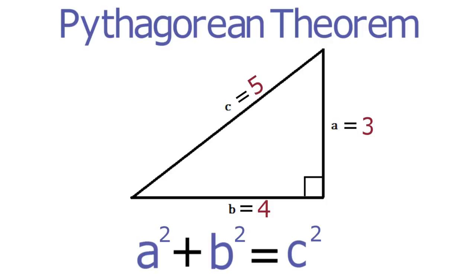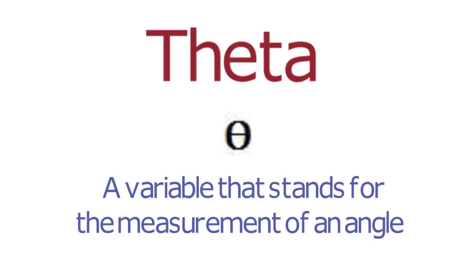In trigonometry, you work with right triangles in a new way. To begin, trigonometry uses a new variable called theta, which is a Greek letter. In trigonometry, theta stands for the measurement of an angle.